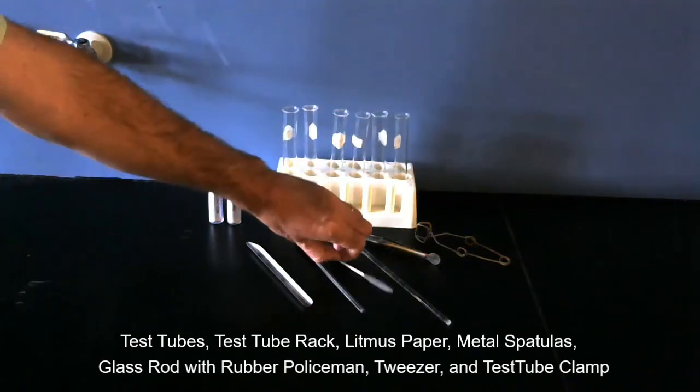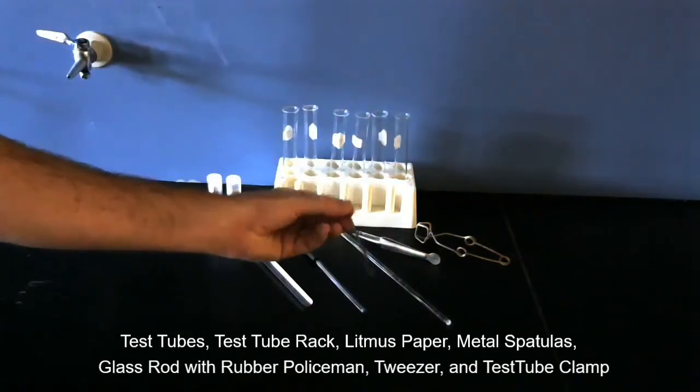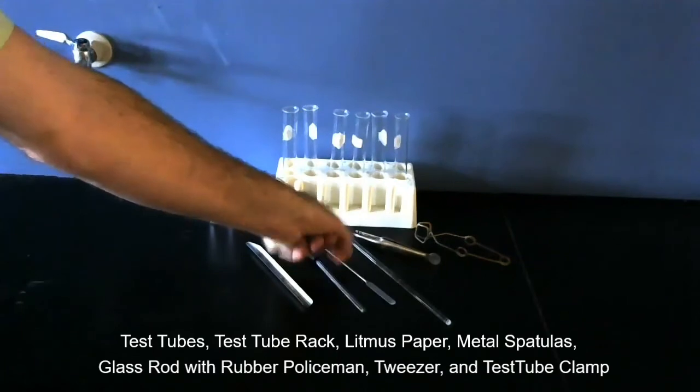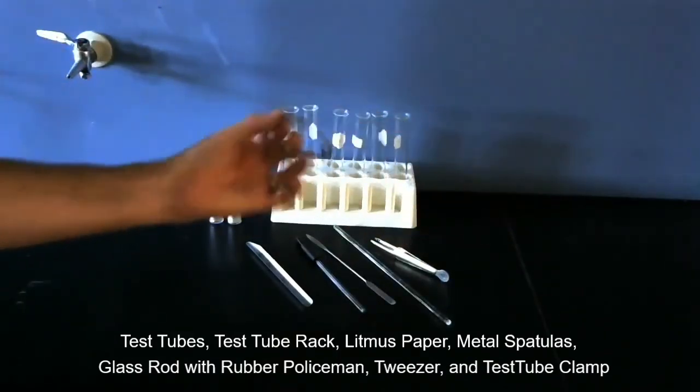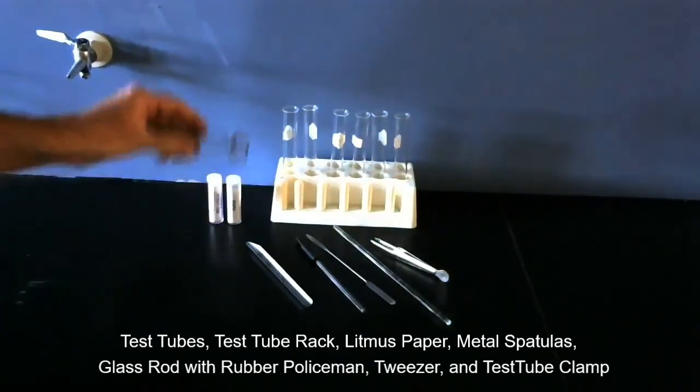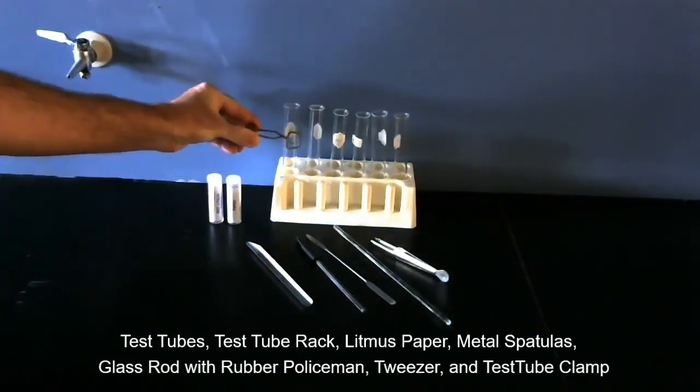Here's another little metal spatula for scooping solids. These are tweezers. And this is a test tube clamp that you would use for moving around the test tubes when they are hot.